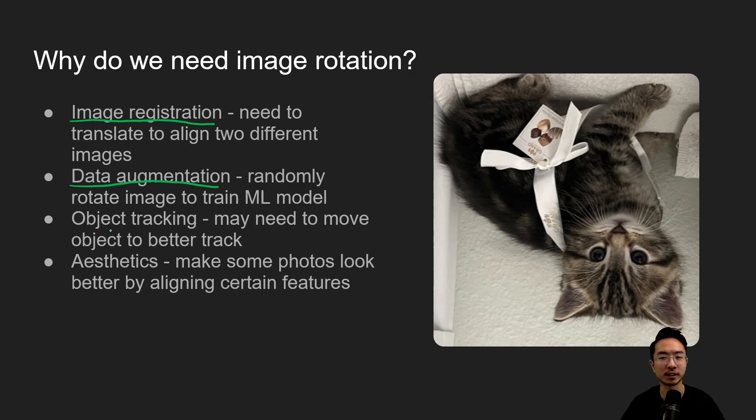And object tracking is another thing. You might have to change the orientation of where you're tracking or sometimes you just may want to have your picture look better. Maybe you have a picture where the horizon line is skewed and then you want to shift it so that the horizon line is horizontal.